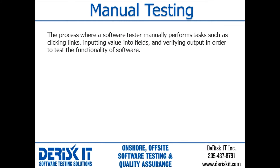Manual testing typically involves the use of test cases to guide a software tester through a step-by-step testing process. By following steps such as manually clicking links, inputting values into fields, and verifying output, a tester can thoroughly test the functionality of a piece of software. By comparing actual outcomes with the expected result of a test case, the tester is able to detect bugs and defects in the software.